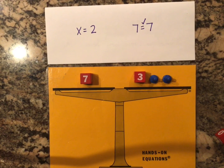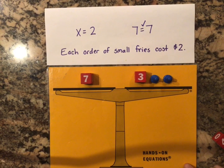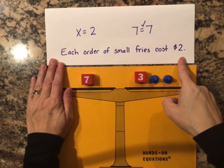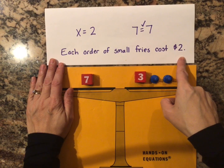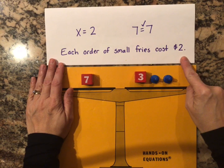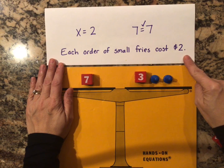Now that I've checked my answer, I'll move on to step five. For step five, you're going to make sure to write your answer including a label. I'm going to record my answer in a sentence, making sure I have a label for what the 2 represents. In this case it was dollars, so: each order of small fries costs $2.